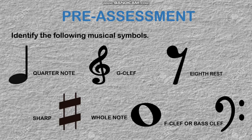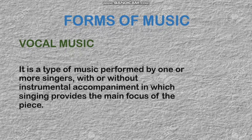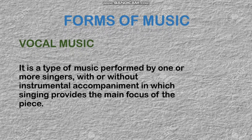Okay, so I think we are ready. Let's start. Forms of music. We have vocal music. Vocal music is a type of music performed by one or more singers, with or without instrumental accompaniment, in which singing provides the main focus of the piece.